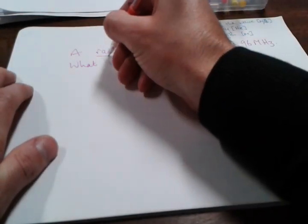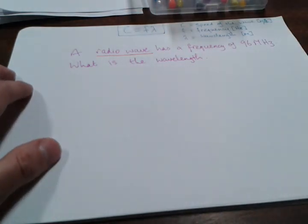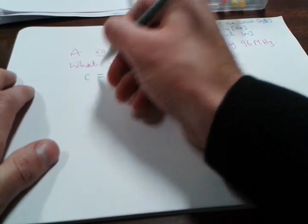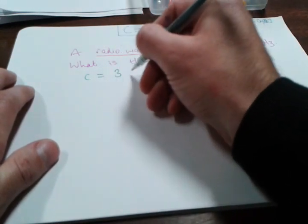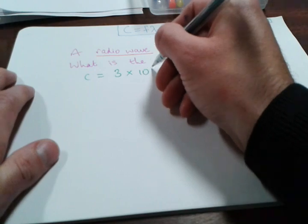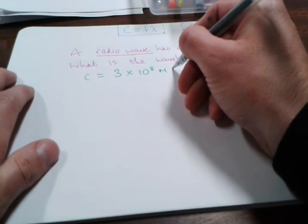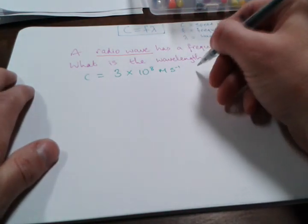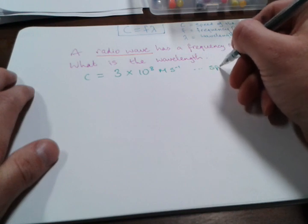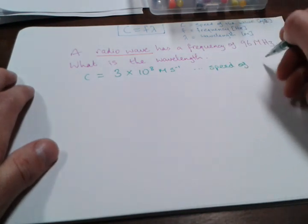We're talking about a radio wave, so we know that c, the speed of the wave, has to be 3 × 10^8 meters per second, which is the speed of light.